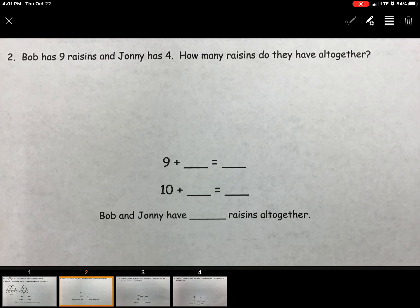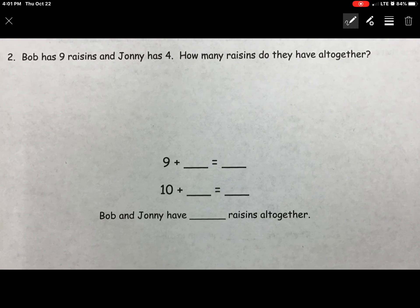For number 2 it says Bob has 9 raisins and Johnny has 4. How many raisins do they have all together? So again we're going to look for our math facts and now we're going to draw what we read. So Bob has 9 raisins. That's our first math fact. So we will draw 1, 2, 3, 4, 5, 6, 7, 8, 9.